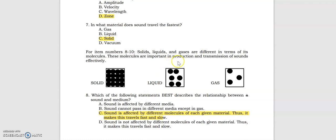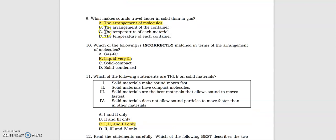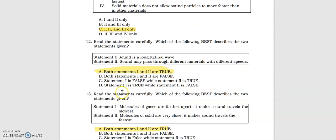For numbers 8 to 10, solid liquids and gases are different in terms of its molecules. These molecules are important in production and transmission of sounds effectively. Take a look at the figure. Which of the following statements best describes the relationship between a sound and medium? Sound is affected by different molecules of each given material. Thus, it makes these travels fast and slow. What makes sounds travel faster in solid than in gas? It's the arrangement of molecules. Which of the following is incorrectly matched in terms of the arrangement of molecules? Liquid very far.